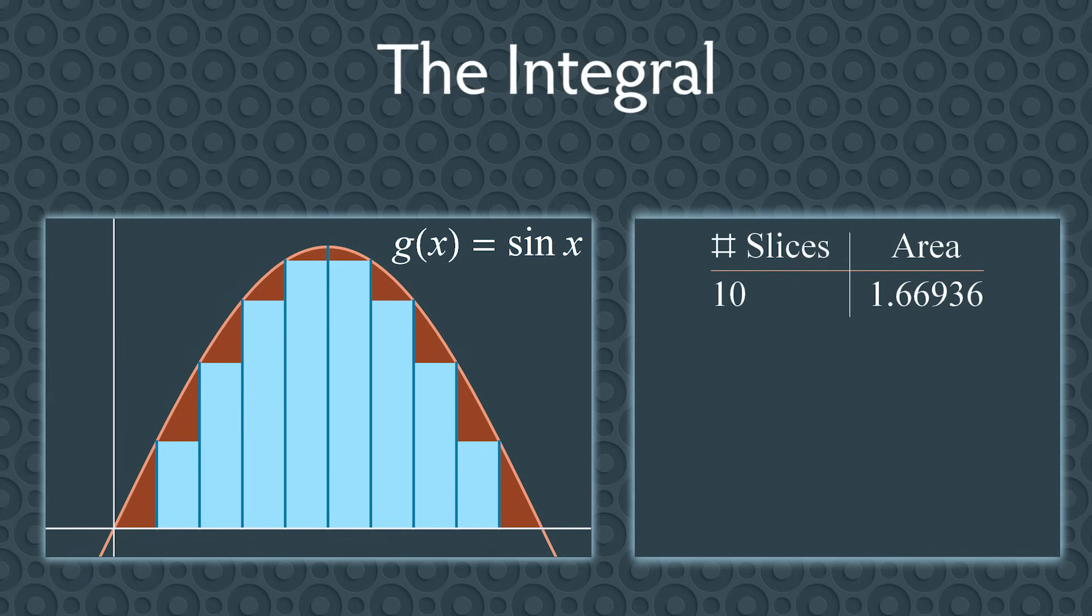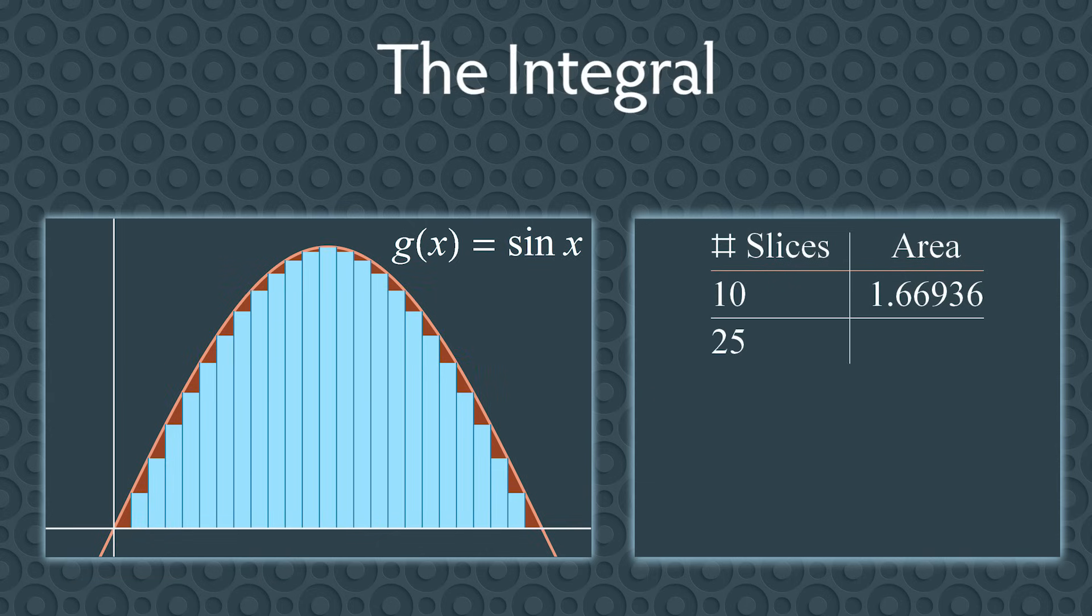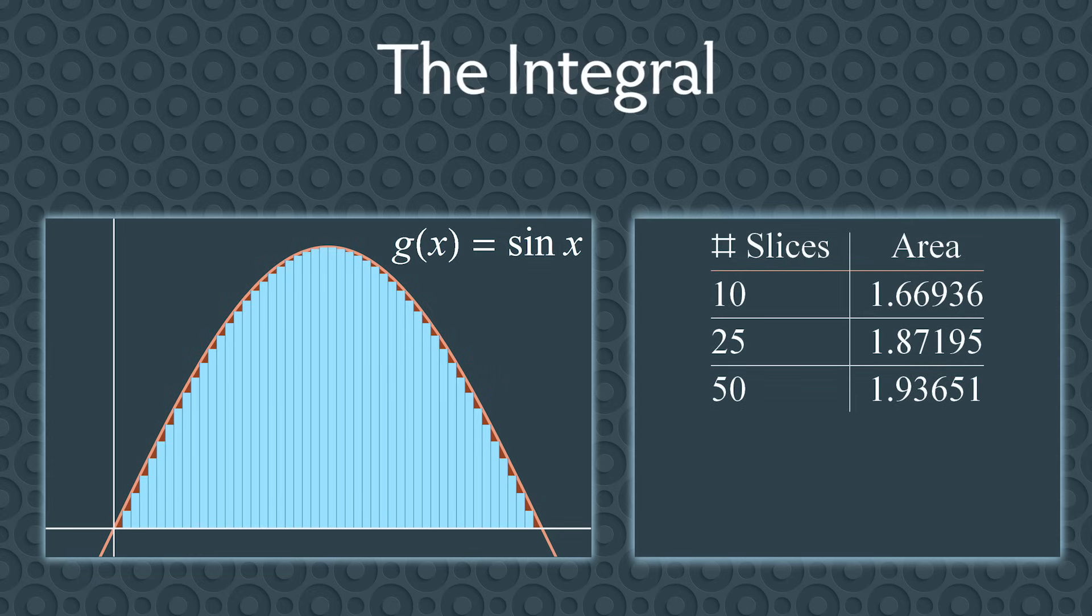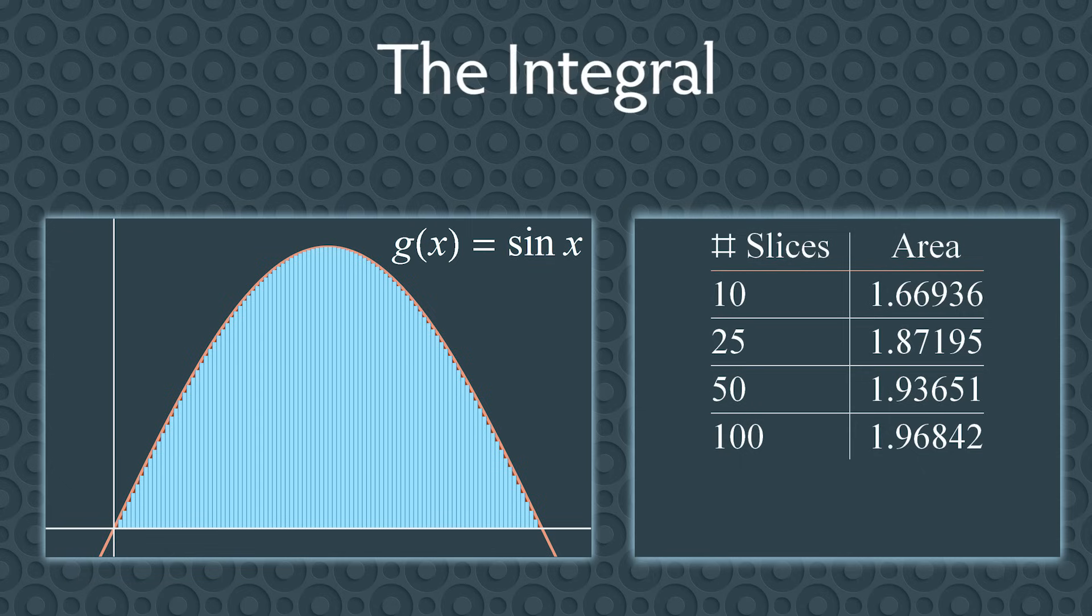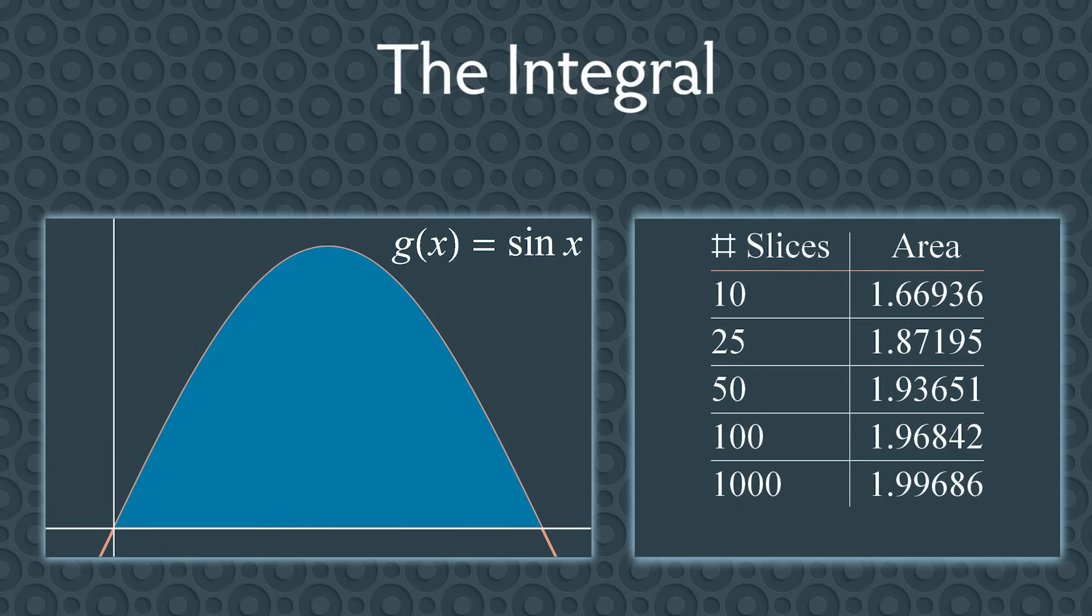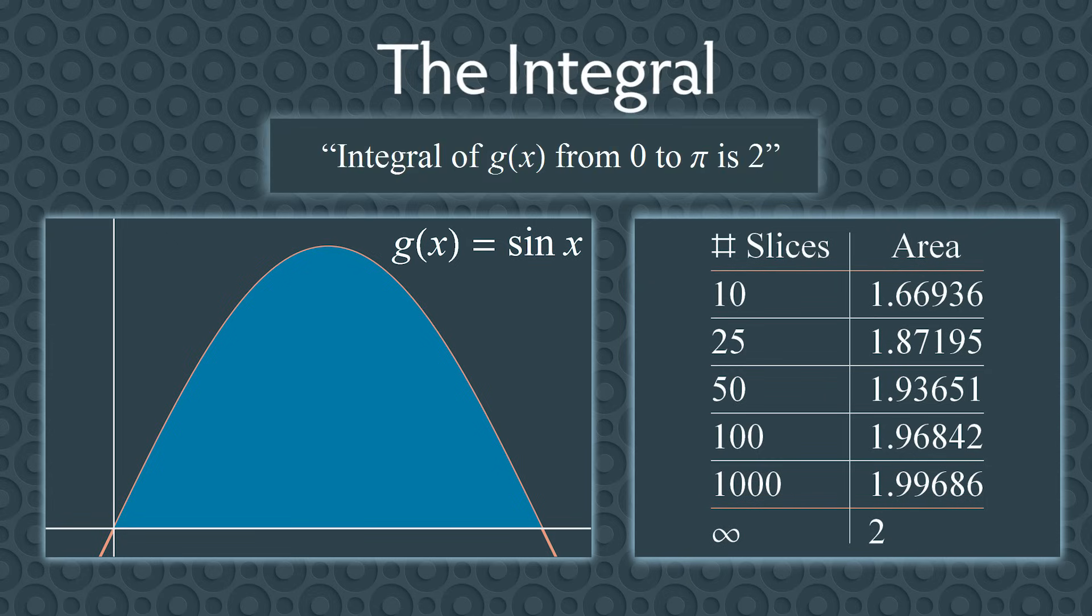What if we do this again but use 25 slices instead? This time, we get an approximate area of 1.87195. Let's do this again and again using thinner and thinner slices. 50 slices, 100 slices, 1,000 slices. You get a sequence of areas that are getting closer and closer to some number. It looks like the area is approaching 2. We call this area the integral of g of x from x equals 0 to x equals pi.